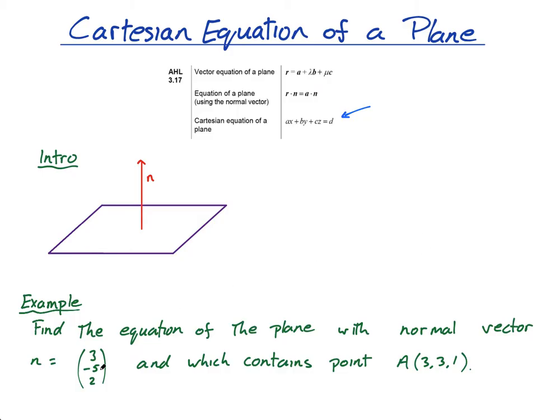But they'll all be going in the same direction. So if, let's say 3, negative 5, 2 is a normal to the plane, then negative 30, 50 and negative 20 is also a normal to the plane. It's just a bigger vector and it's going in the opposite direction.